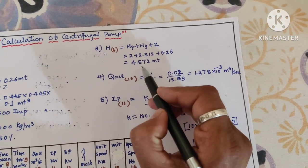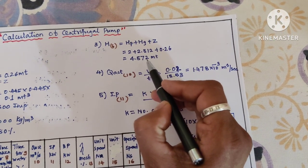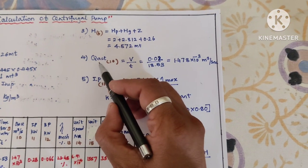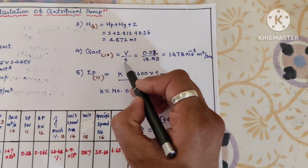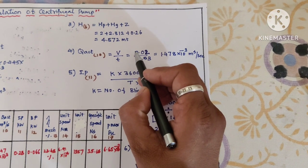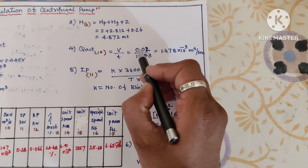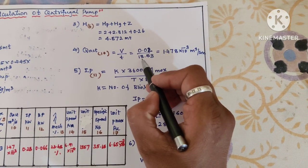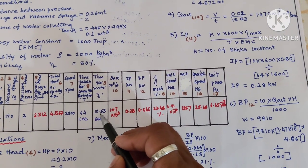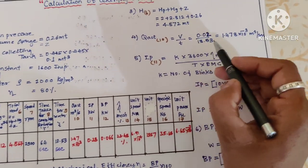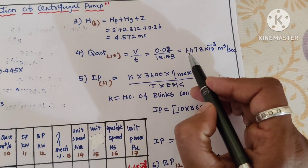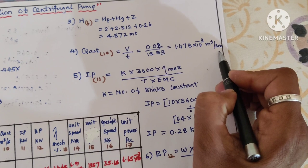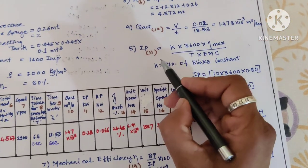The next one, actual volume, which is V/T. For this calculation I am taking the volume as 20 liters, that is 0.02 meter cube, divided by 13.53. The answer is 1.478 × 10^-3 meter cube per second.